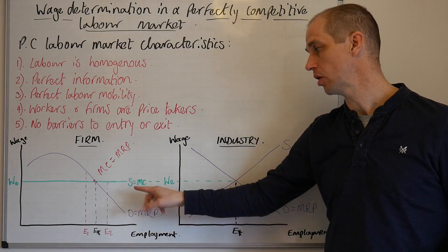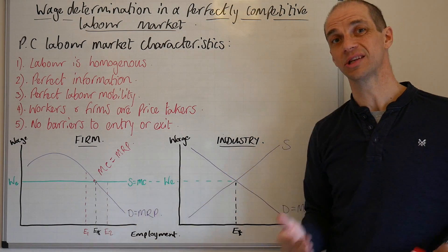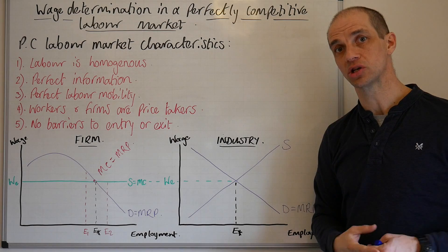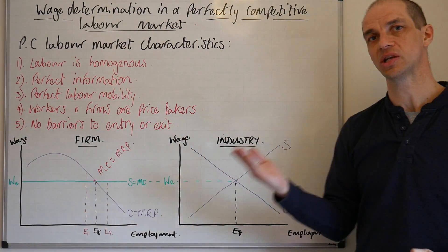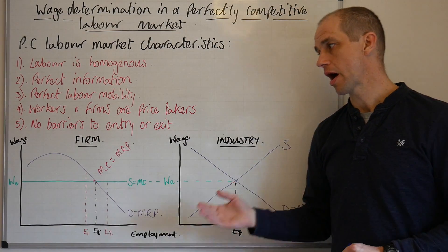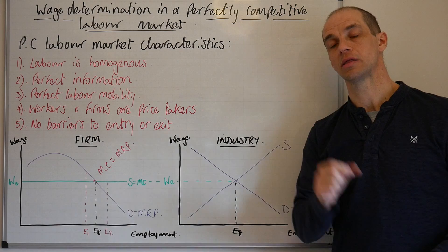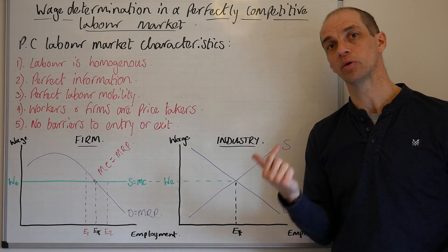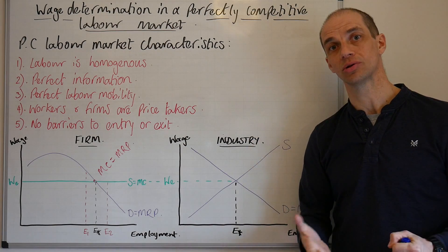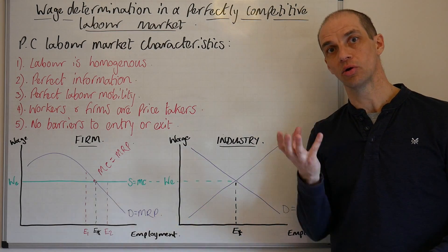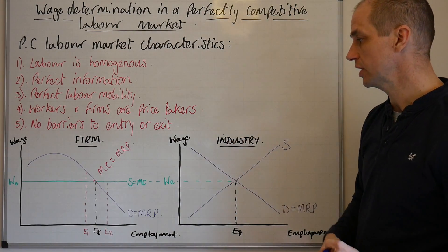It's also worth noting that our elastic supply curve here is equal to the marginal cost, and it's also equal to the average cost as well. So if the going rate was, say, £10 per hour and each worker was being employed at £10 per hour, then the marginal cost of employing another worker would be £10 an hour, and that would of course be the average cost as a whole when you take the total cost and divide it by the number of employees.